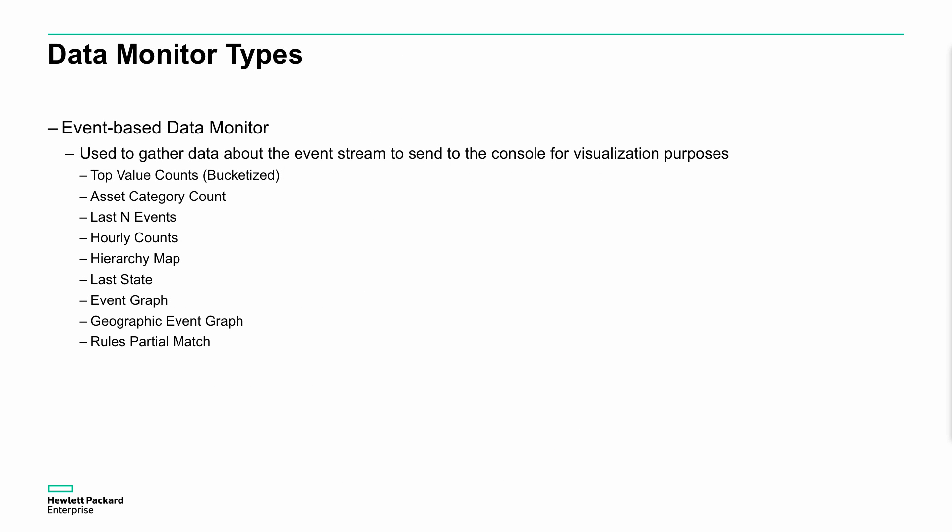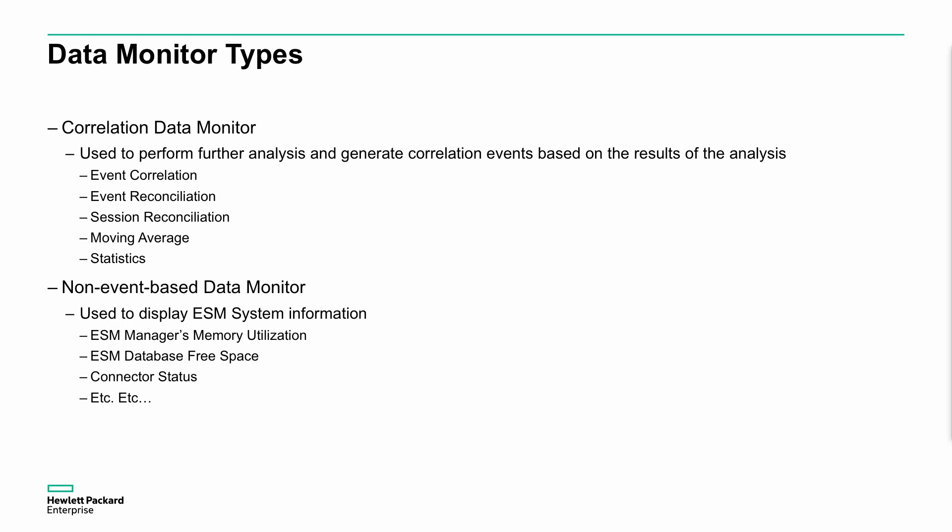There are many different types of data monitor. We can do event-based data monitors. We can do things like top values, asset count, last number of events, hourly counts, hierarchy map, last state, event graph, geographic event graph, and rule partial match. A couple of those are very specific, and we won't be digging into those. But let's step through a couple of other scenarios around what we can also do with data monitors.